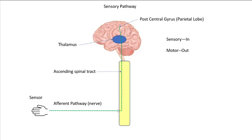They follow an afferent pathway to the spinal cord, they move up to the thalamus, over to the post central gyrus of the parietal lobe, and I feel the pain and the burning.